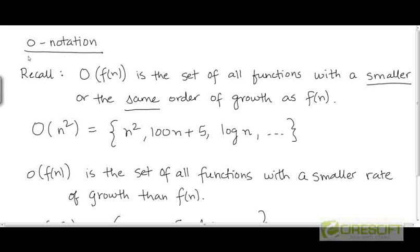We are now going to look at a fourth asymptotic notation called the little-o notation, which is analogous to the big-O notation, but it is a notation that is used much less frequently.